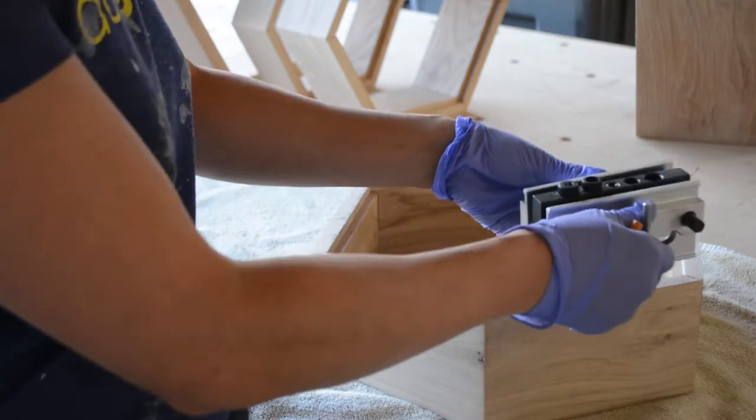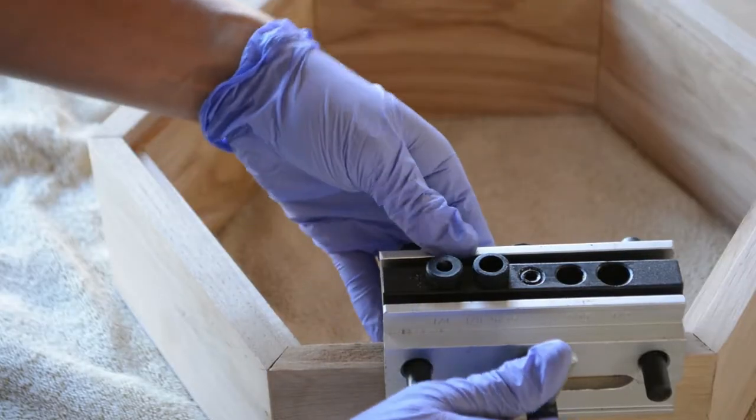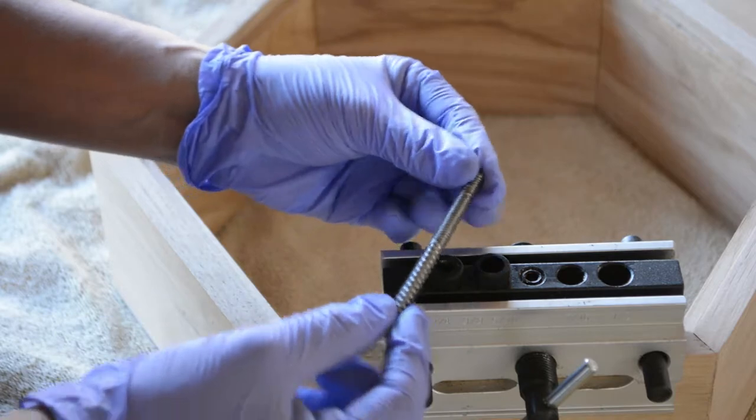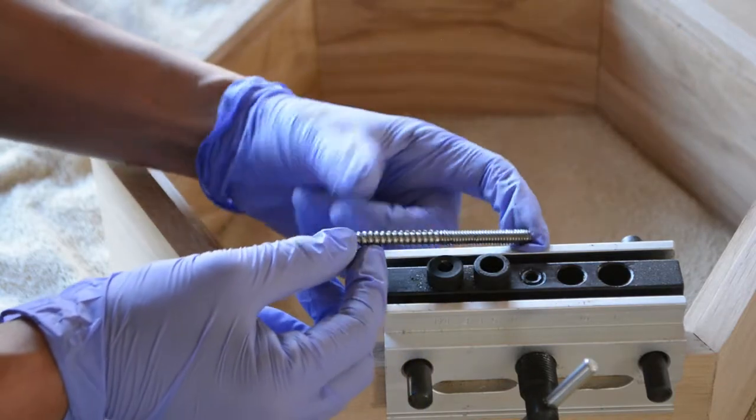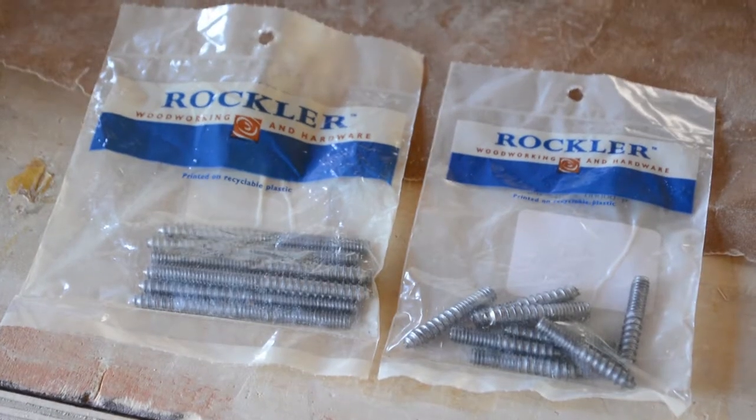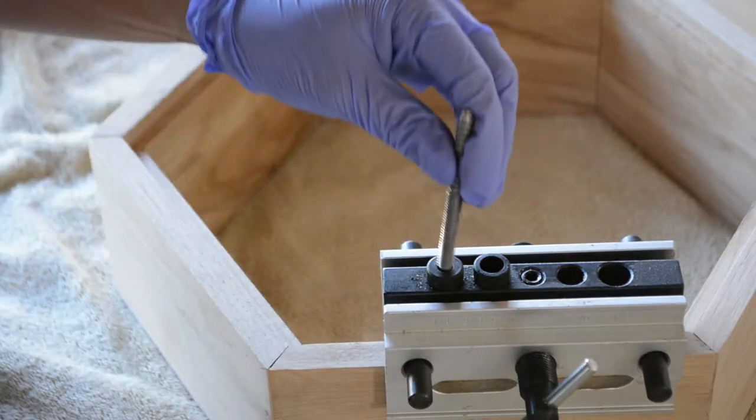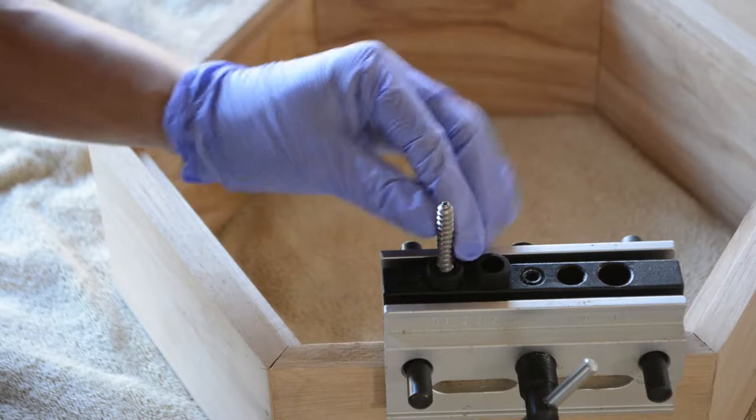I'm going to use a doweling jig to help me drill the holes perfectly straight into the wood. A drill press would be better but I don't own one yet. These are the three inch hanger bolts that I got from Rockler Woodworking. The end with the fine threads goes into the wood and the pointy end is supposed to go into the wall for hanging.